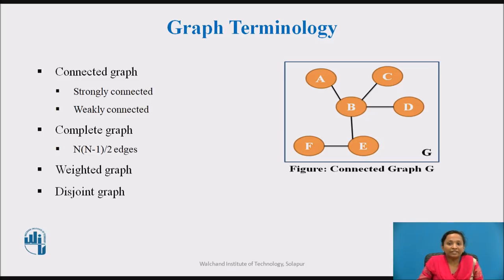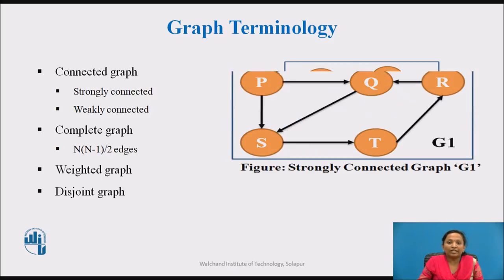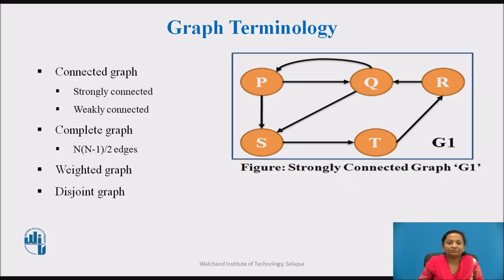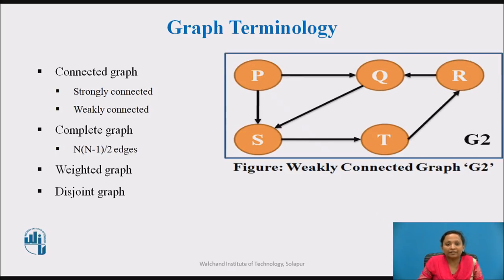Connected graph: Two vertices are said to be connected if there is a path between them. A graph is said to be connected if there is a path from any vertex to any other vertex, with no unreachable vertices. In a directed graph, if there is a path from each vertex to every other vertex, then it is a strongly connected graph. A directed graph is weakly connected if at least two vertices are not connected.